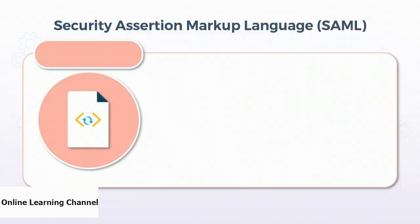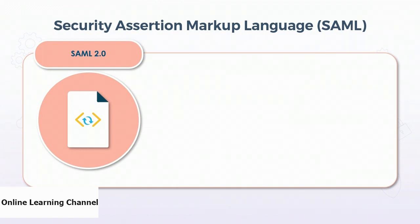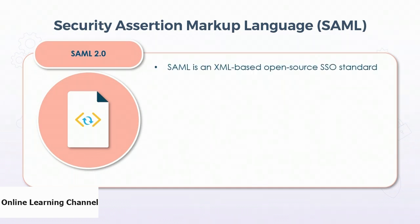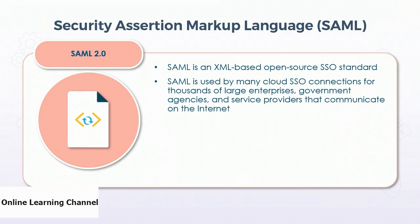Back in the 1990s, in the early days of the World Wide Web, HTTP was chosen as a transport mechanism for authentication and authorization. What came out of that was SAML — first version 1.1 and eventually, by 2005, SAML 2.0. SAML stands for Security Assertion Markup Language. It's a federated service that provides an assertion — a secure transaction — using a markup language, XML. It's an open-source single sign-on standard, very popular today, used by many cloud SSO connections for thousands of large enterprises, government agencies, and service providers.